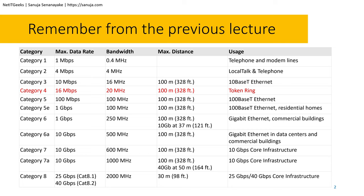I mentioned that Category 1, 2, and 3 are mostly used in the telecommunication industry, but at the Category 3 level, 10-base Ethernet came into effect, giving us about 10 megabytes per second data rate. Category 4 is a special cable using the token ring system that went out of favor very soon after it was introduced later that decade.